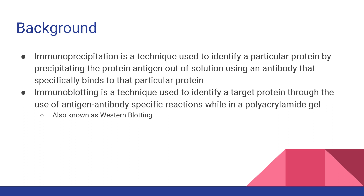Immunoblotting is a technique used to identify a target protein through the use of antigen-antibody specific reactions while in a polyacrylamide gel. This is also known popularly as Western blotting.